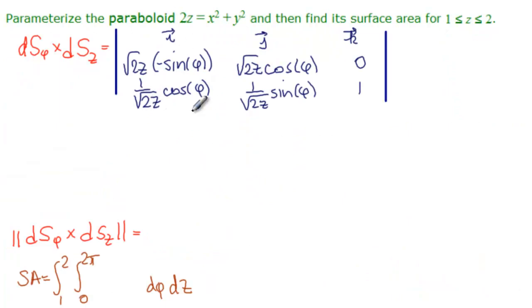So here we have set up the vector product with our two gradient vectors here. Equals. And let's start with i. i, we have the square root of 2z cosine of phi times 1 minus 0. So just the square root of 2z cosine of i. And then minus j. And we have this minus here times 1. And this is 0. So this is going to be plus the square root of 2z sine of i.